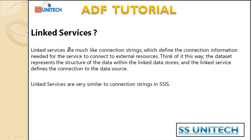So what are linked services? Linked services are very much like a connection string, which defines the connection information needed for the service to connect to external resources. Those resources could be your SQL Server or your blob storage. You can think of it this way: you have a dataset that represents the structure of the data, and the dataset contains the actual information. To get data into the datasets, you need a connection — and that connection is called a linked service. Linked services are very similar to connection strings in SSIS.